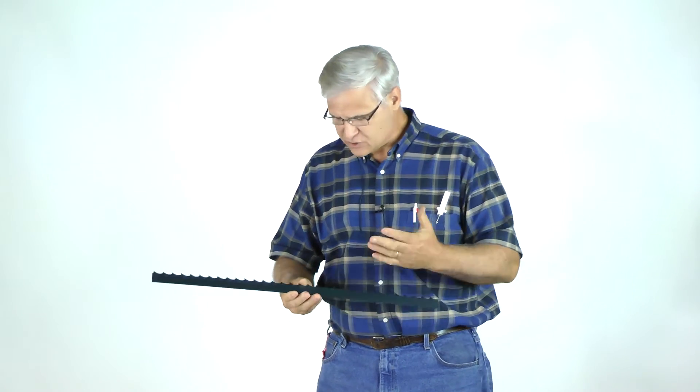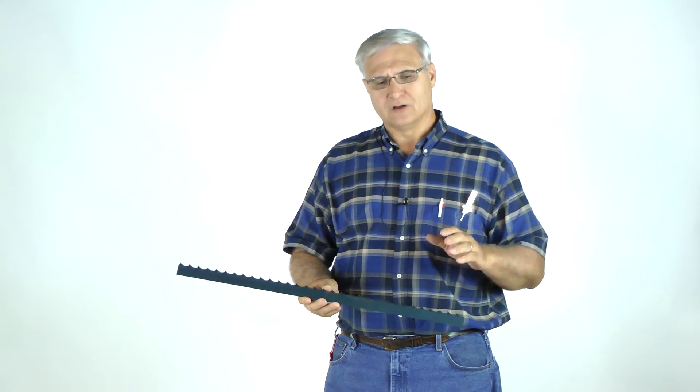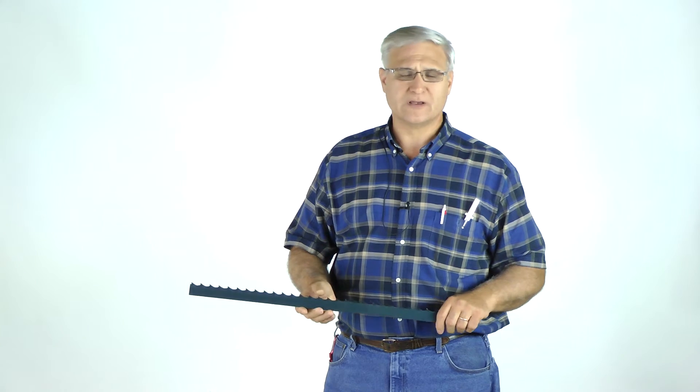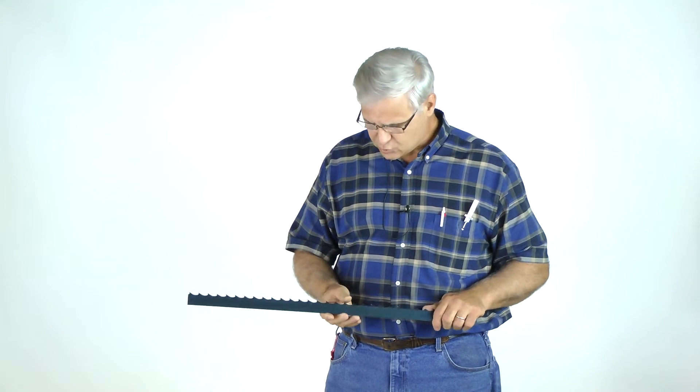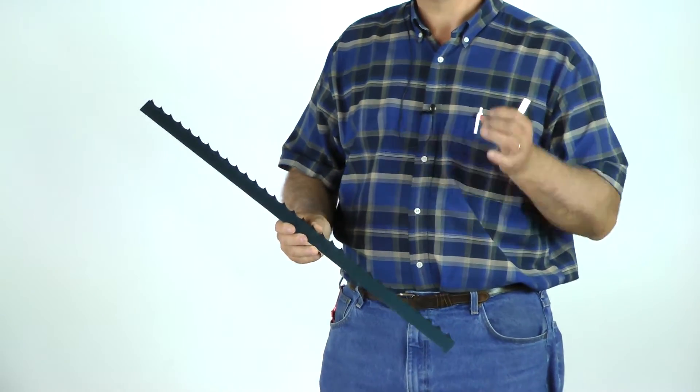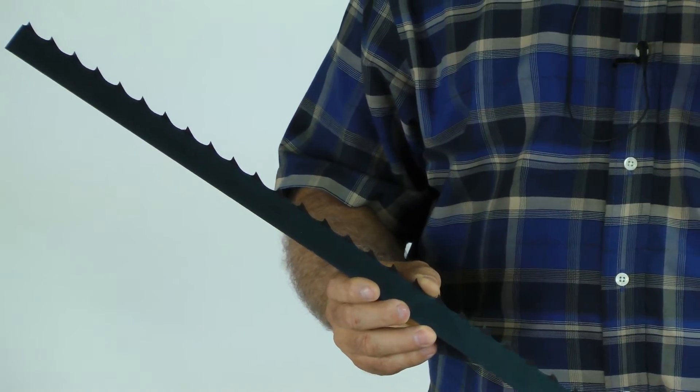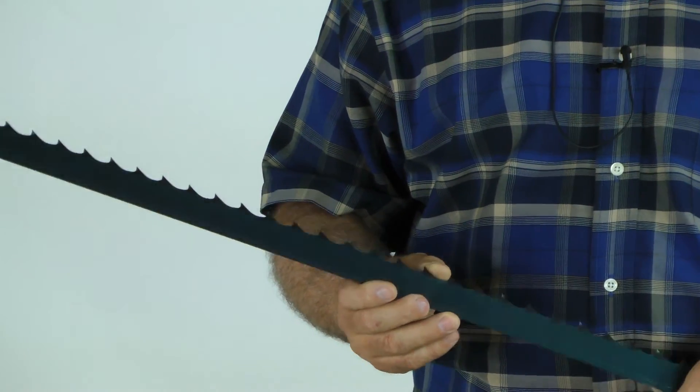The second thing I'll mention in this short video today is the width of the blade. In the portable bandsaw mill industry, resaw industry, we deal with blades from one inch wide, that's from the back to the very tip. Inch and a quarter, inch and a half, and two inches. So those are the basic widths that are standard.